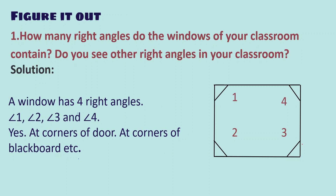Question 1 of Figure It Out: How many right angles do the windows of your classroom contain? Do you see other right angles in your classroom? Generally a window is in rectangle or square form. Therefore we observe four right angles as shown in the picture — angle 1, angle 2, angle 3, and angle 4 are each 90 degrees. We also observe right angles at the corners of the door and at the corners of the blackboard in our classroom.